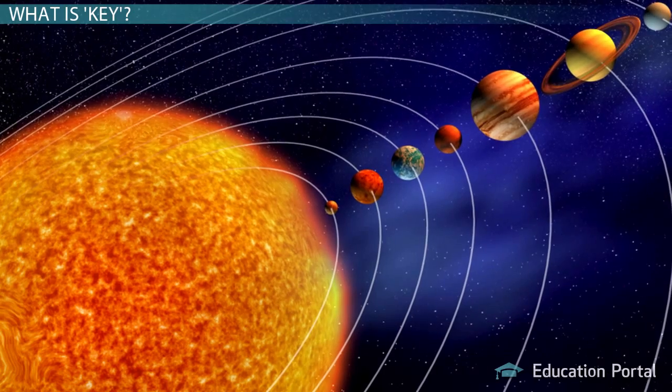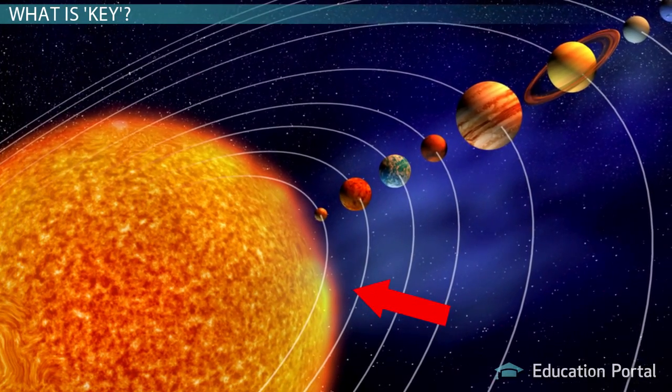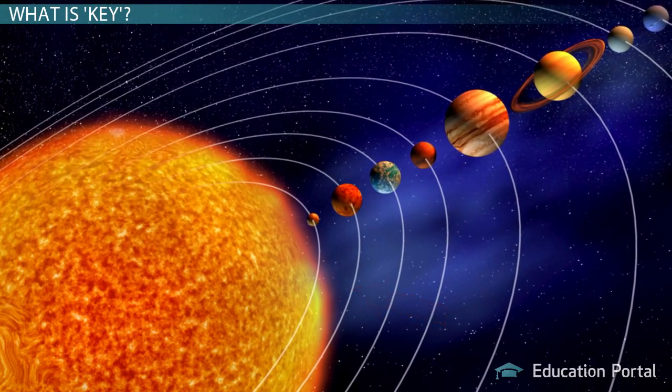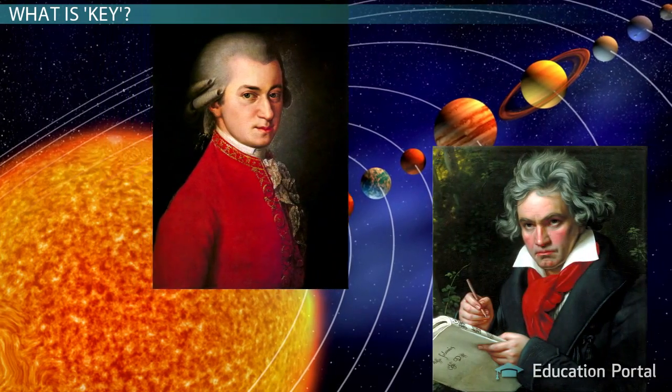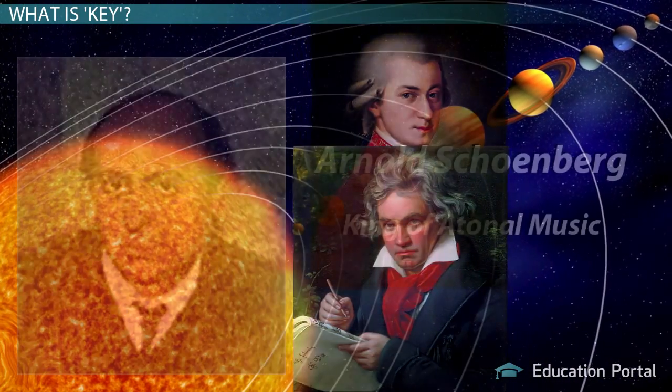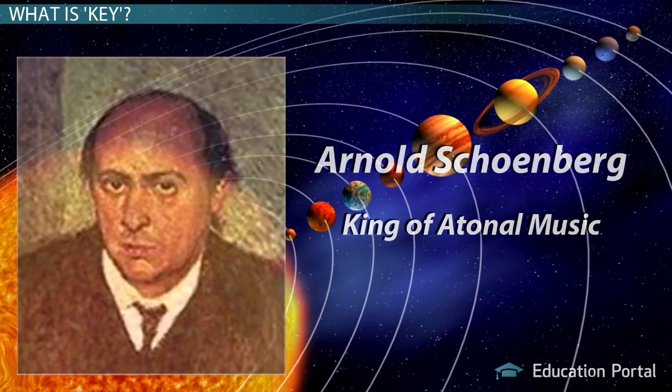You can think of key like a solar system. The planets rely on the sun for gravitational pull, which is essentially how notes of a song rely on a key or tonal center. Most composers use a tonal center to make their piece understandable, and to make the piece come together as a whole. Those that don't use tonal centers in their compositions tend to have music that sounds a little lost in space.